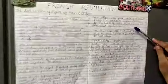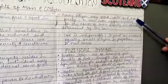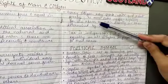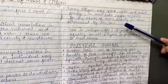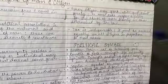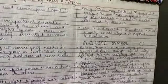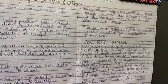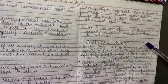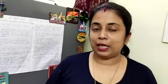Every citizen may speak, write, and print freely, but must take responsibility for the abuse of such liberty in cases determined by the law. And last, tax is indispensable, which means it must be assessed equally on all citizens in proportion to their means — whatever occupation they have, according to that they have to pay taxes.